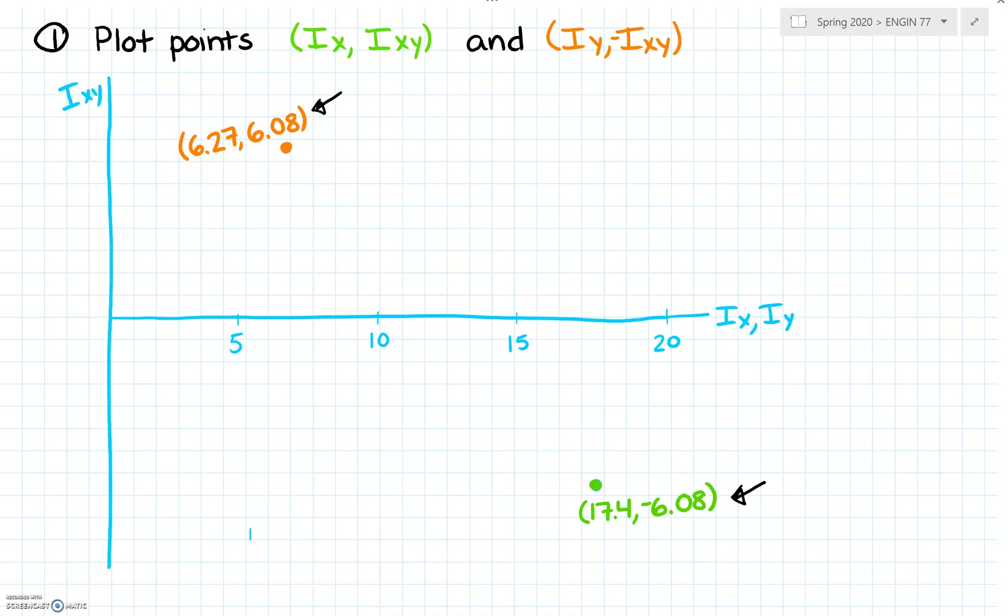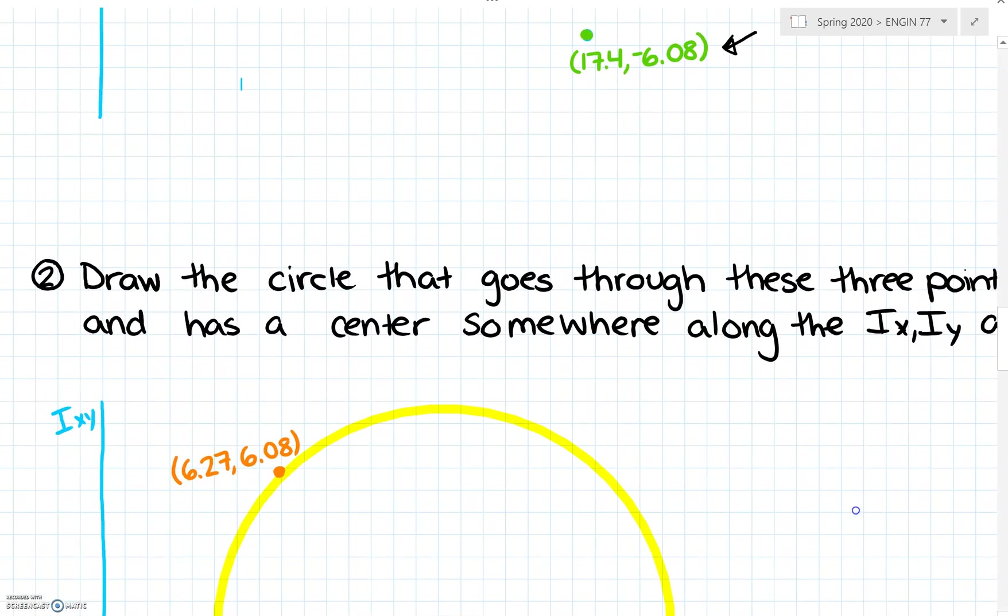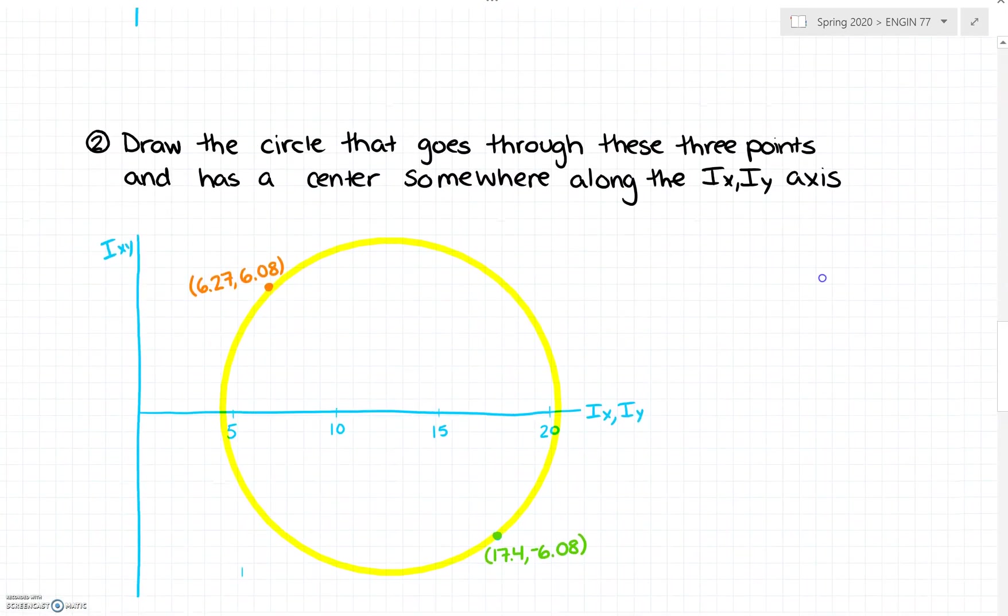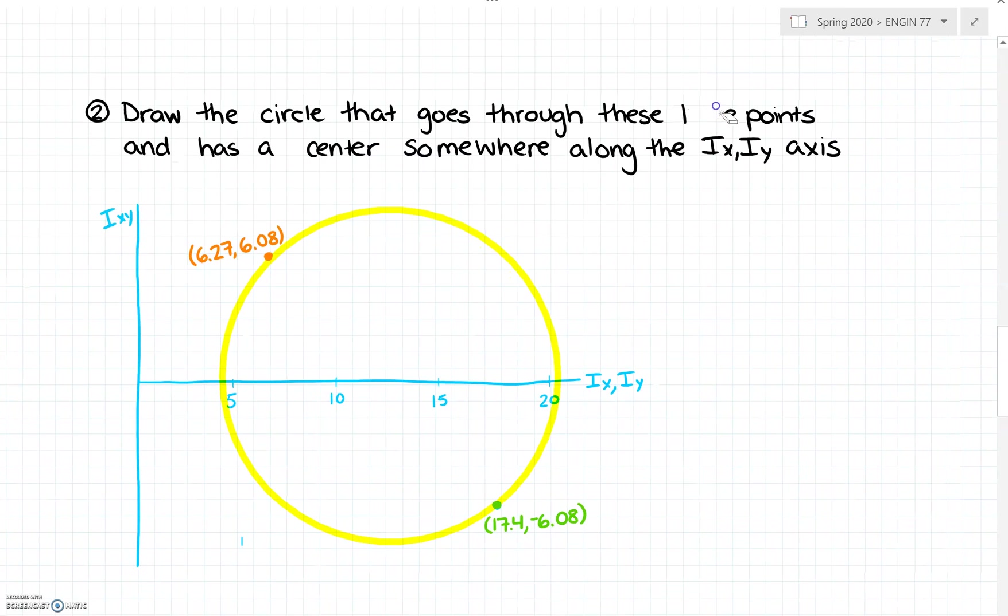Once we have those points plotted, we're going to draw the circle that goes through these two points and has a center somewhere along this Ix Iy axis. So it's centered on the x axis and goes through those two points.